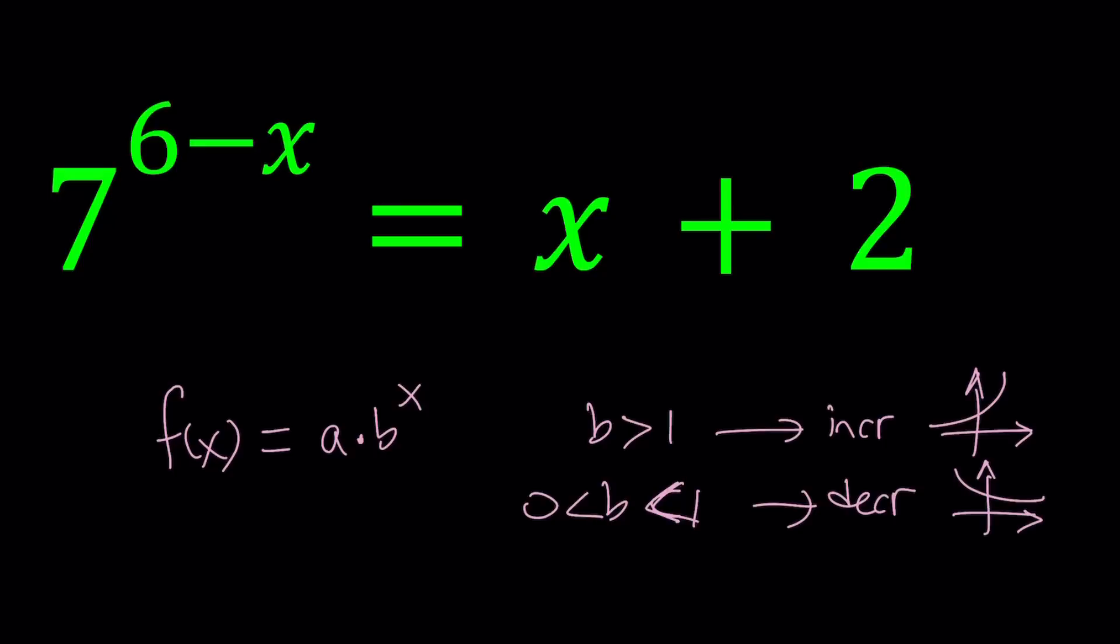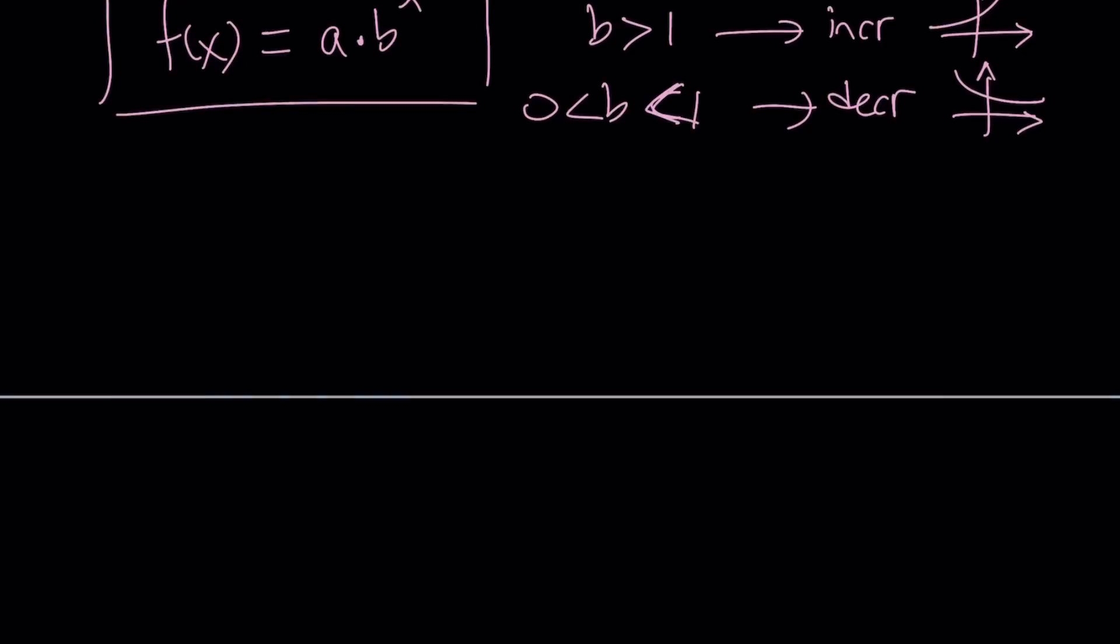So, I'm going to show you a couple ways to approach it. First of all, as is, our function does not really fit this pattern. Because I said our exponential function is going to look like this, a times b to the power x, but ours is a little different. So, let's go ahead and work it out a little bit.